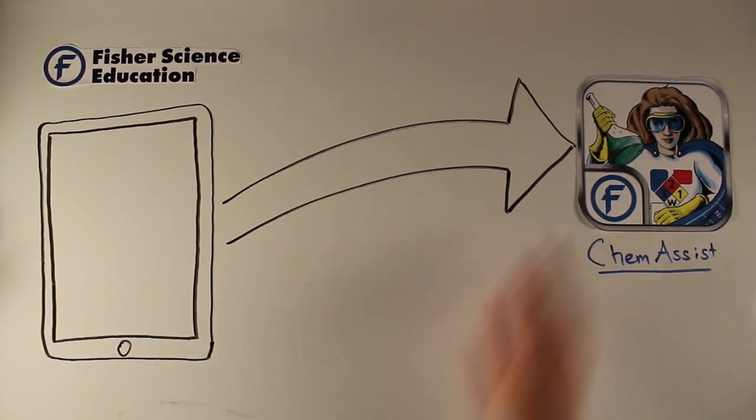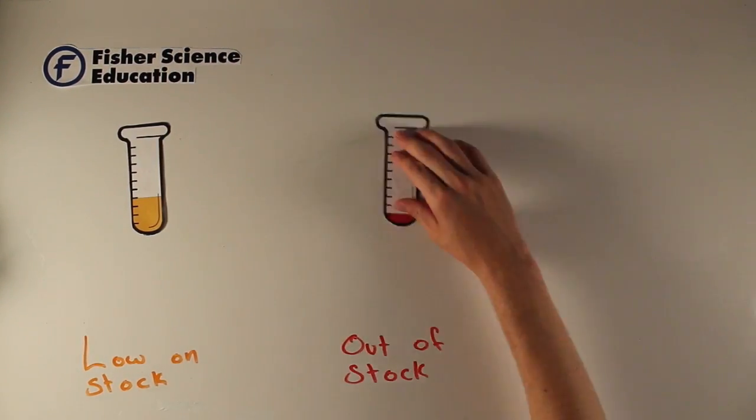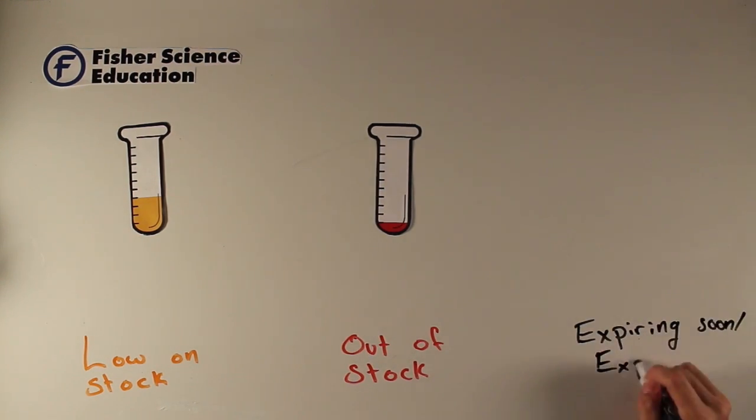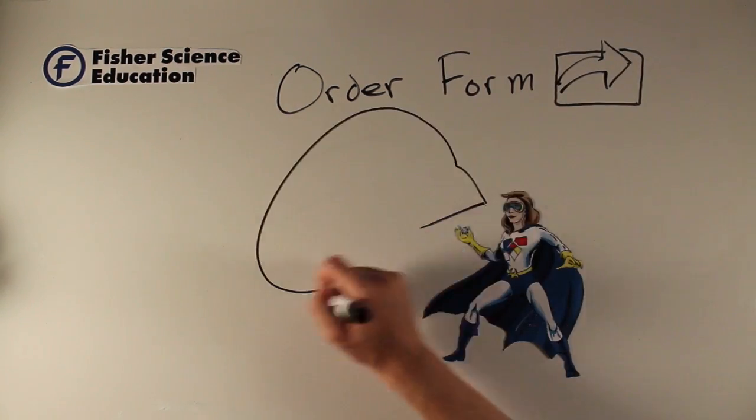Chemist will allow you to keep track of all of your chemicals in your laboratory, and will let you know when you're low on stock, when you're out of stock, or if your chemicals will expire soon. You can create an order form right from the app, making the process of keeping a well-stocked chemical cabinet that much easier.